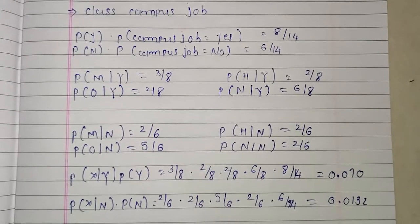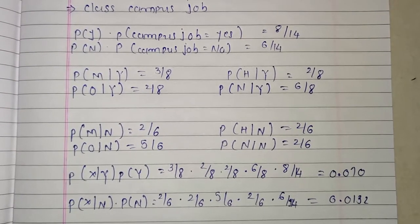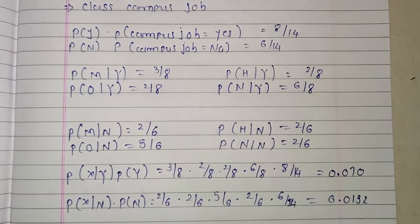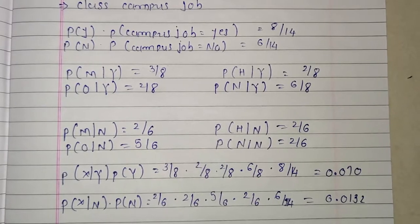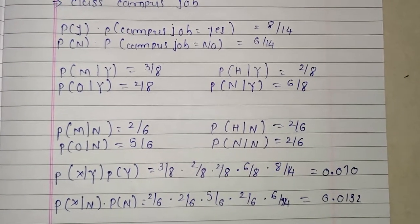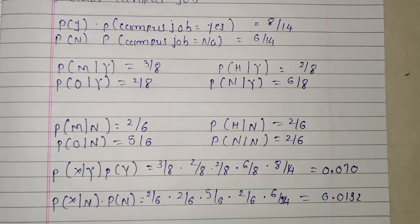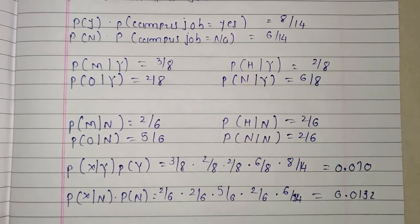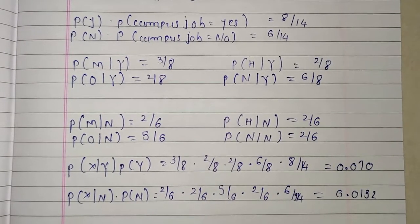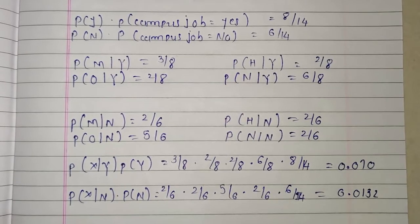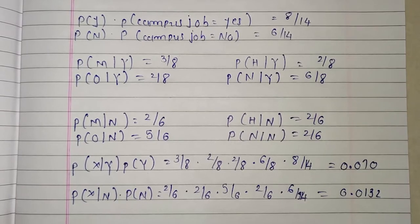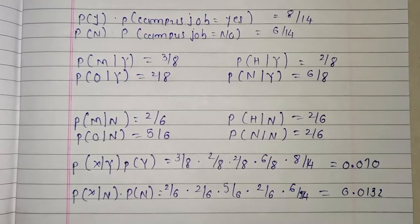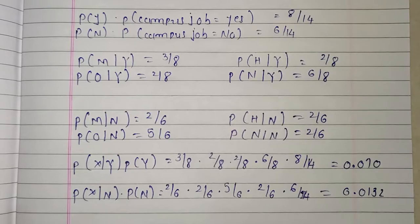Posterior probability for class yes: P(X|Y) into P(class level yes) equals 3 by 8 (college grade medium, class yes) into 2 by 8 (school grade high, class yes) into 2 by 8 (gender female, class yes) into 6 by 8 (sports interest no, class yes) into 8 by 14 (probability of class level yes) equals 0.010.